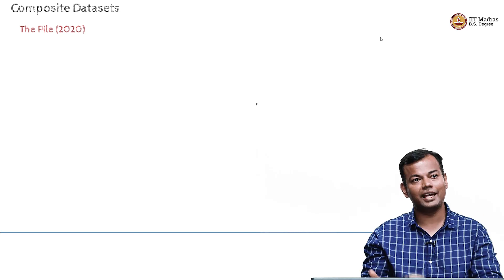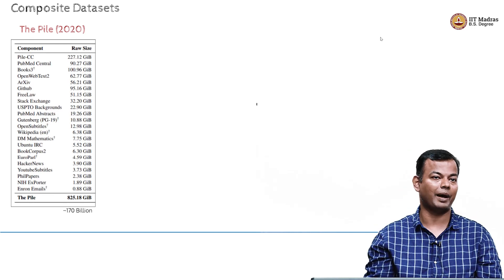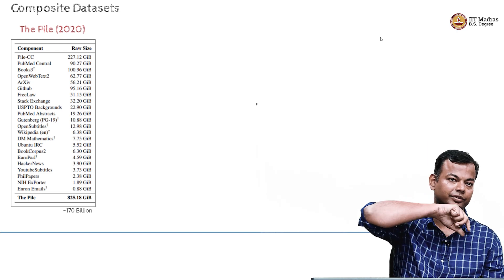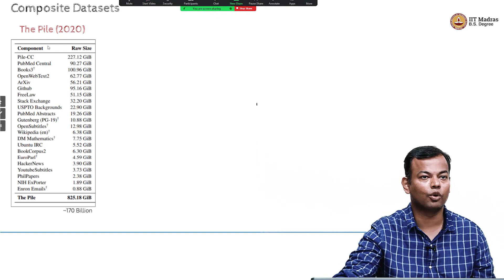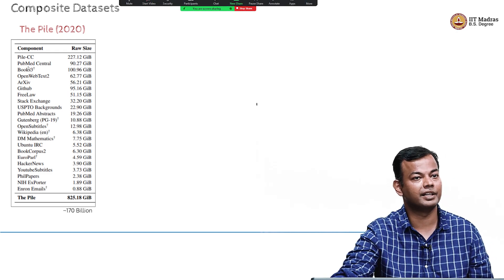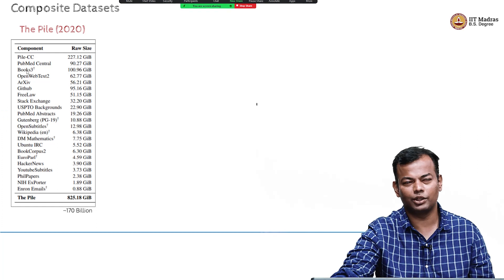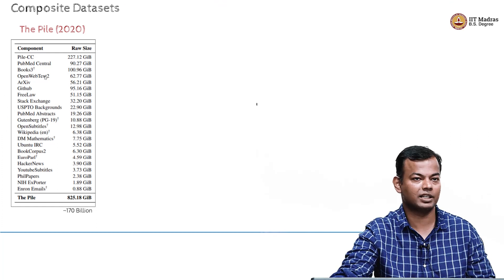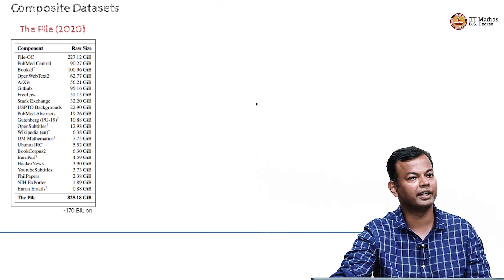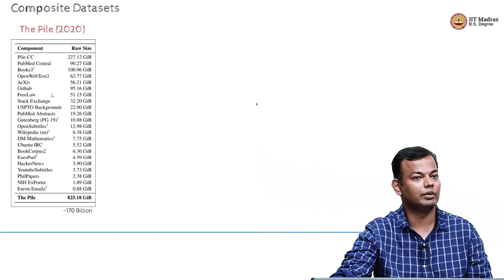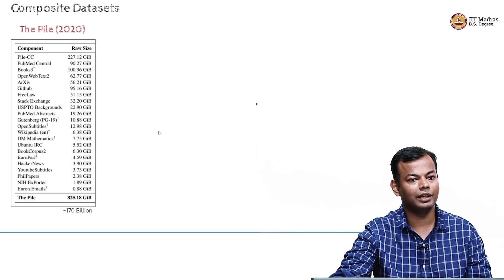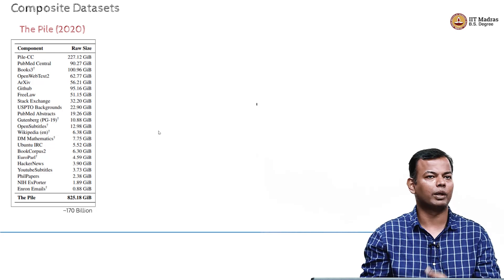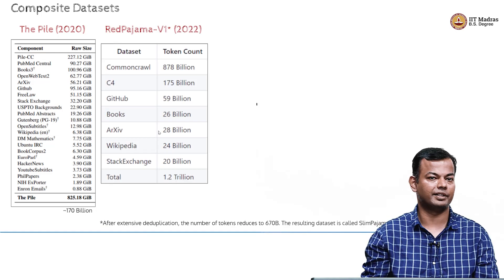There are datasets which are aggregations of other datasets. The Pile is a compilation or aggregation of many datasets — it includes the Common Crawl part, articles from PubMed, books, OpenWebText, arXiv, GitHub code, log content, Stack Exchange, and more. Multiple different sources were aggregated to create the Pile, which is 170 billion tokens. It was popular at one point, but now many bigger datasets have come up.